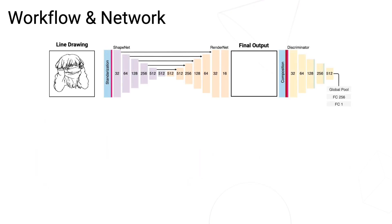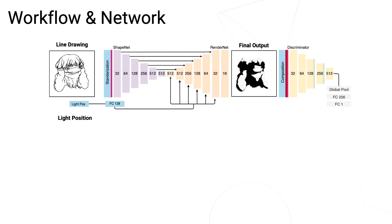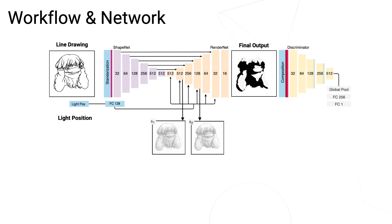This is the general workflow of our network. The line drawings are inputted into the encoder first. The lighting directions are embedded by a fully connected layer. We repeatedly add the embedded lighting directions into each stage of the decoder. The final outputs are binary shadows, as in our ground truth. We also have two intermediate outputs to facilitate the learning process.